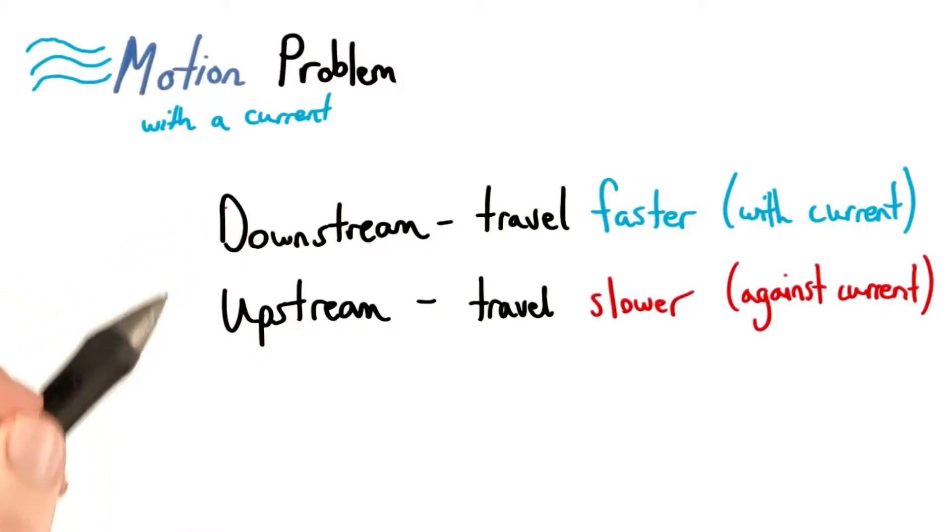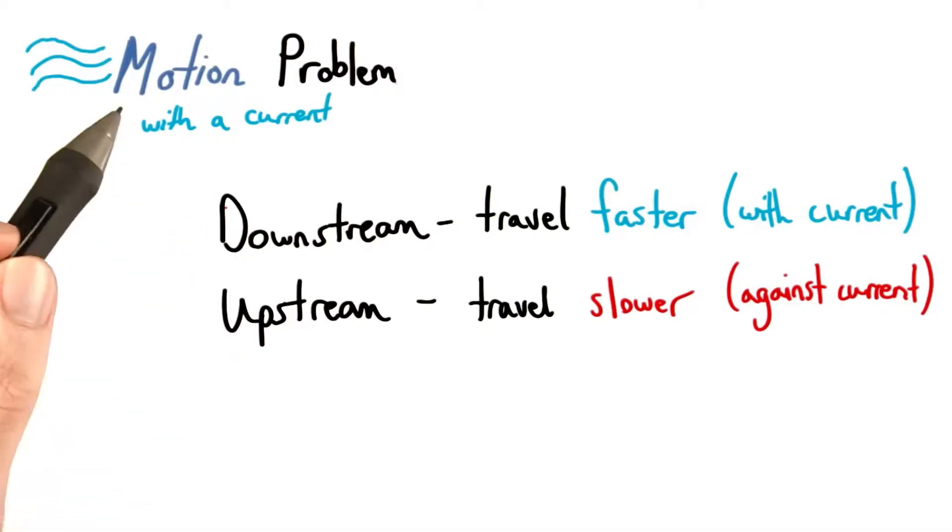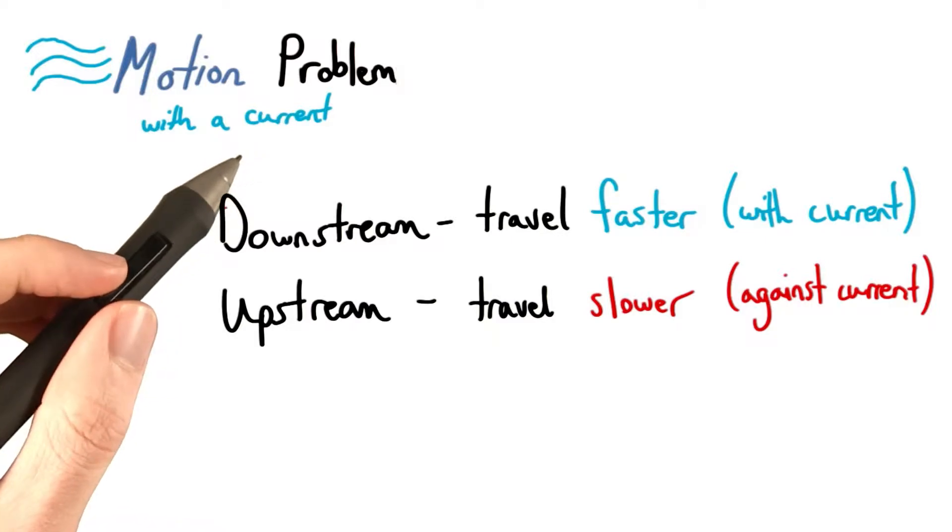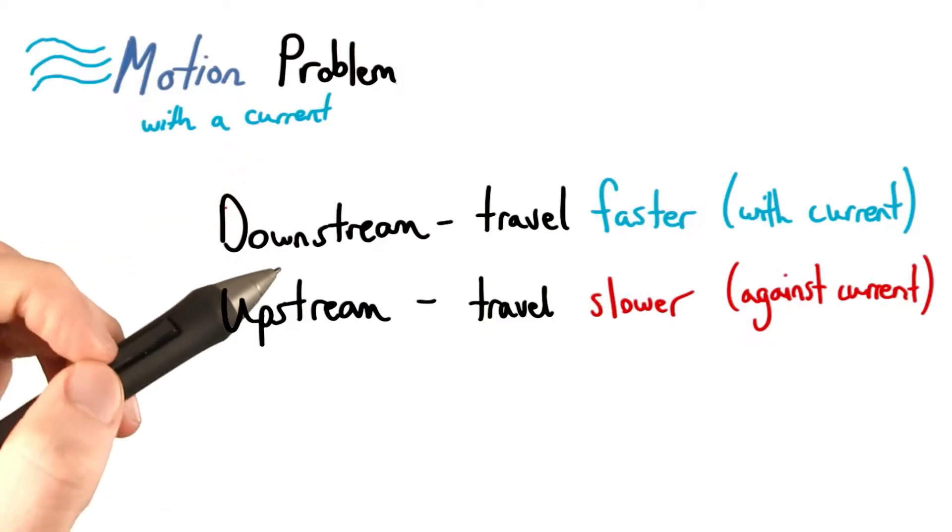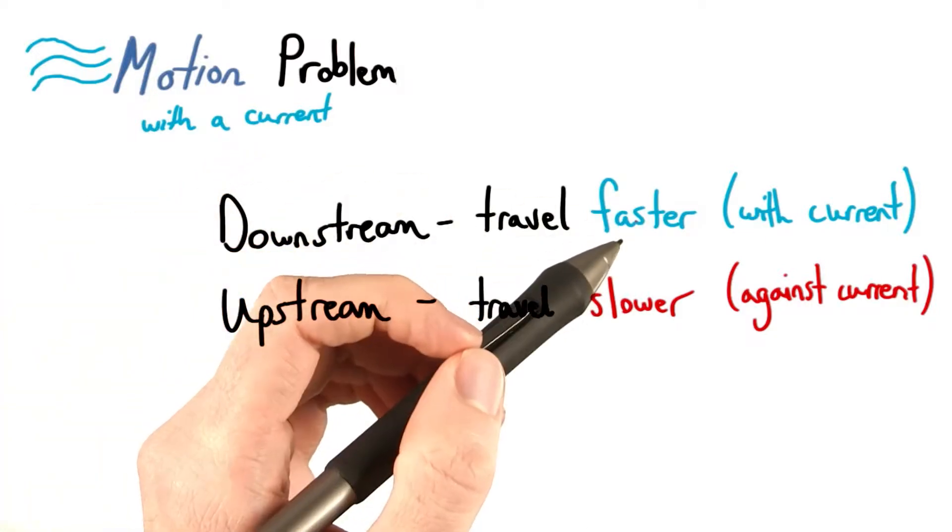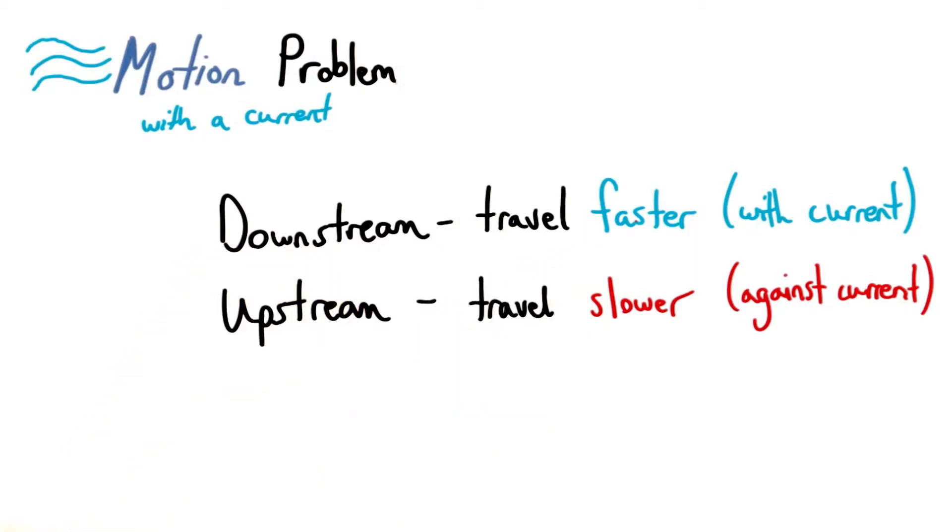We'll use this knowledge of downstream and upstream to help us solve a motion problem with a current. We know that if we travel downstream, we'll end up traveling faster, since we'll be going with the current. But if we travel upstream, we'll have to be going slower, since we're going against it.